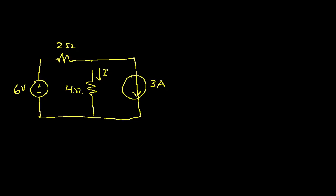In this example, the current I might be something that we want to solve for, and the way we could solve for it would be to say that the current I is the sum of I prime, where I prime is the current due to the 6-volt source with the 3-amp source set to zero, plus the current I double prime, due to the 3-amp source with the 6-volt source set to zero.